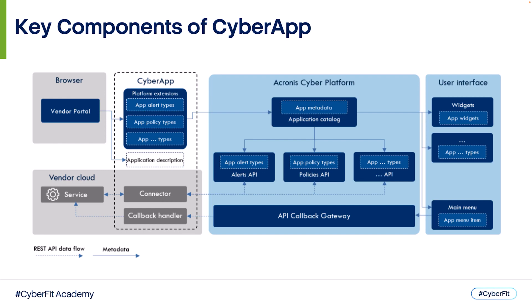While extensions define the functionality of the Cyber App, the connector delivers the data — such as alerts, workloads, events, etc. — from the ISV service to the platform for inbound integrations, or from the platform to the ISV service for outbound integrations. The Callback Handler is an API endpoint that accepts HTTP requests from the API Callback Gateway, processes them according to the specified format, sends the corresponding action to be executed by the ISV's service, and returns the operation result.